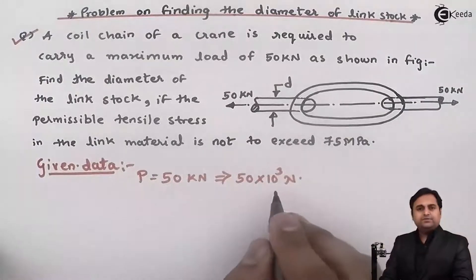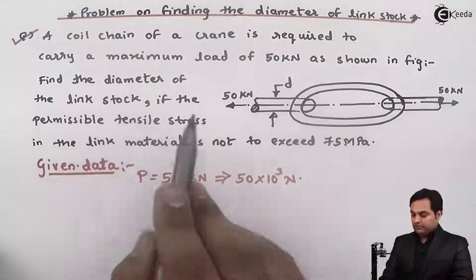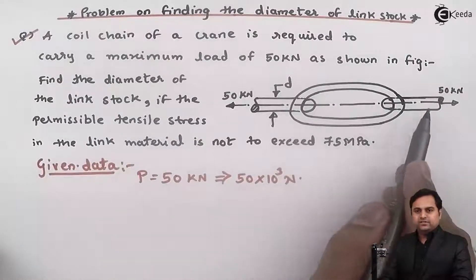So it is 50 into 10 raised to 3 newtons. As shown in figure, find the diameter of the link stock, we have to calculate the diameter of this link stock.